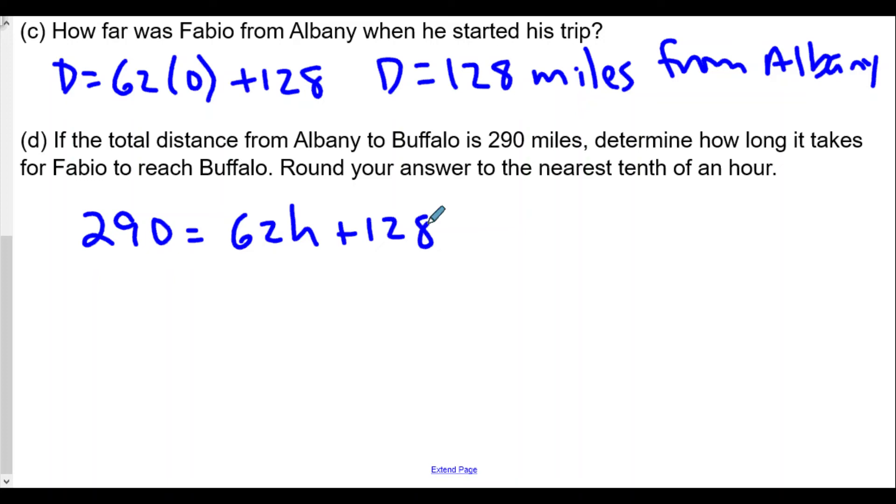We're going to subtract 128 from both sides to solve for h. We're going to get on the left side this becomes 162, and 162 = 62h. We're then going to divide both sides by 62.